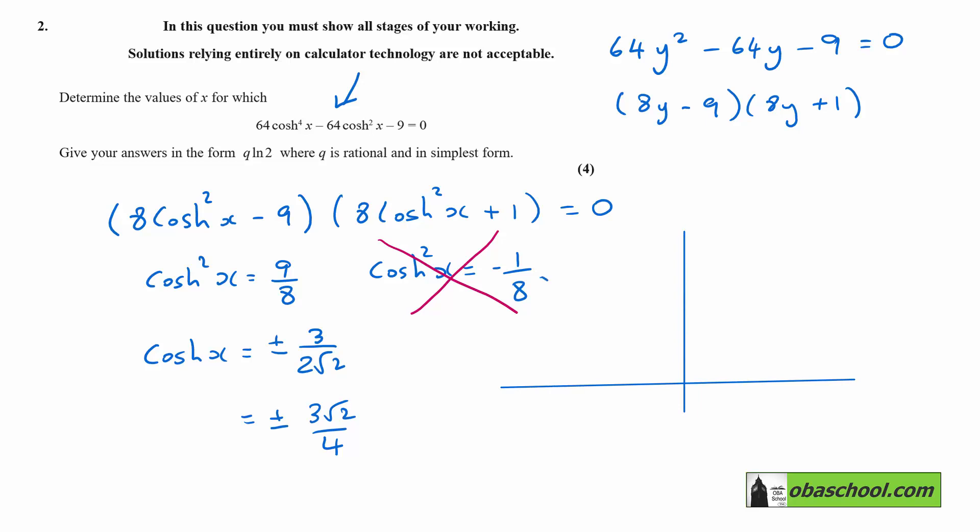The graph of cosh looks something like this and indeed the lowest point here is at 1. So make a note that it can't be negative and then we have that cosh x is equal to 3 root 2 on 4.